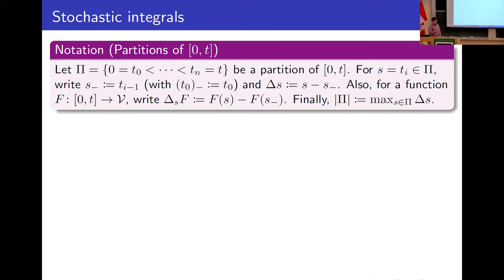I'll introduce some notation for partitions of an interval [0, t], which will be useful for both this talk and David's. π is a partition of [0, t]. For a member s of the partition — say t_i in this labeling — I write s_minus to be the partition member to the left of s (i.e., t_{i-1}), Δs to be the partition increment s minus s_minus, and Δ_s f for the increment of a function f over the partition interval. The partition mesh |π| will frequently be taken to zero in limits.